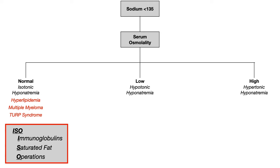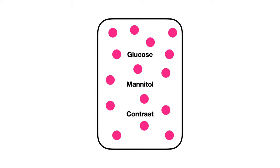Now let's talk about hypertonic hyponatremia. The causes are hyperglycemia, mannitol, and radiocontrast use. In a blood vessel, you can have glucose — since some of us have too much of it — mannitol if it's being used in treatment, or radiocontrast if the person is getting a radiology study.